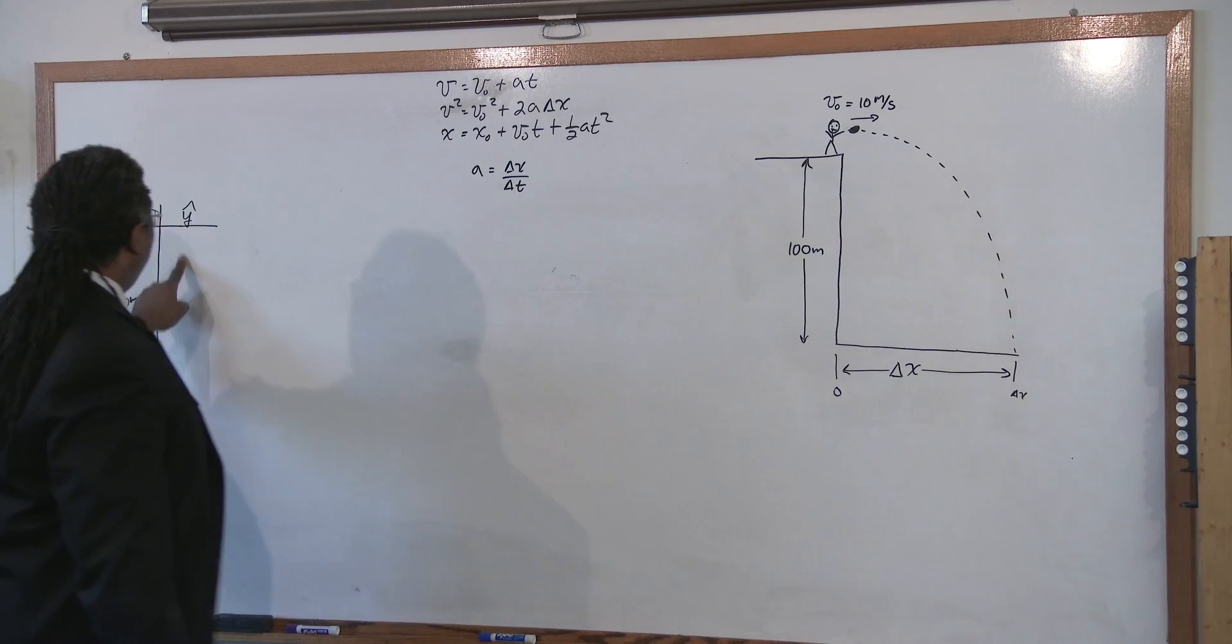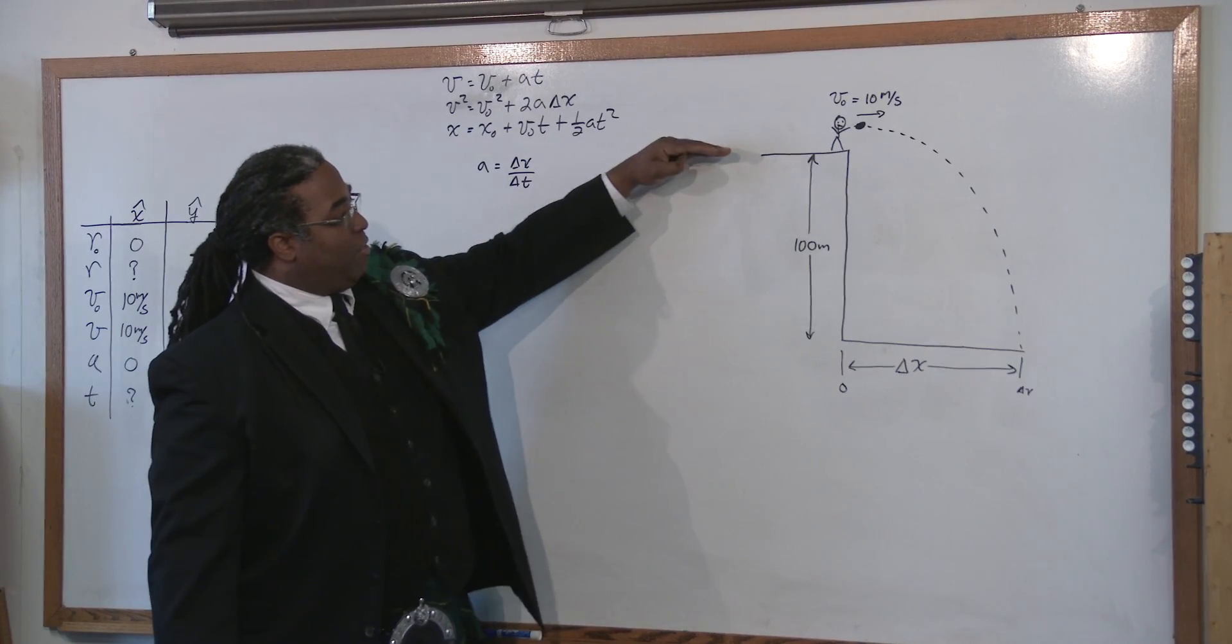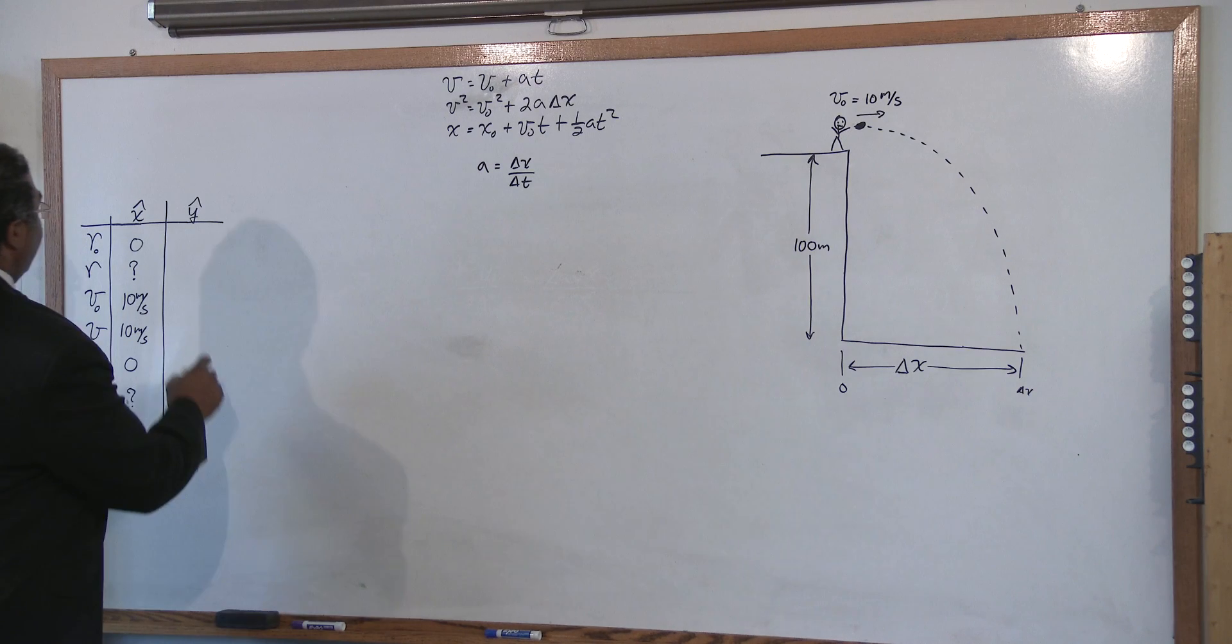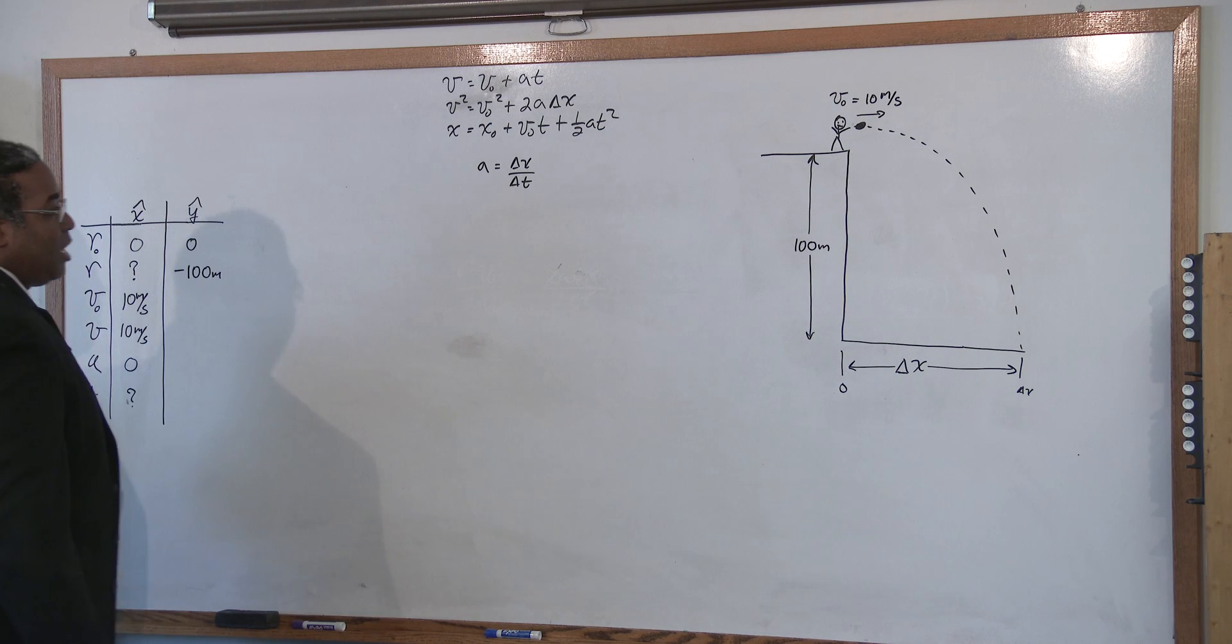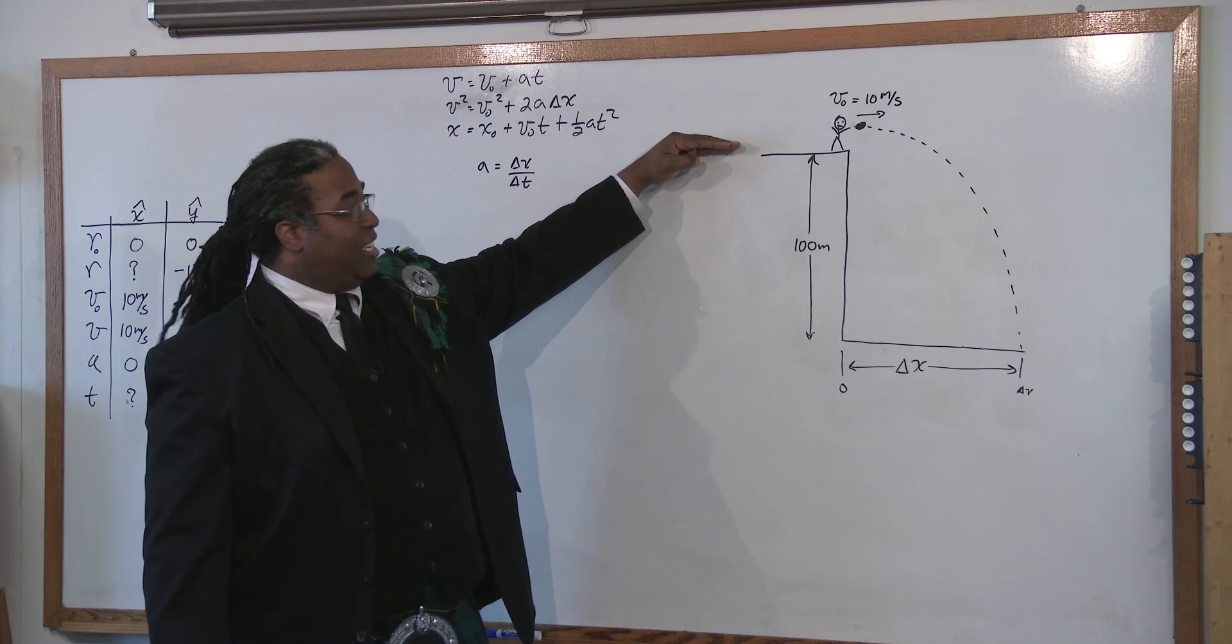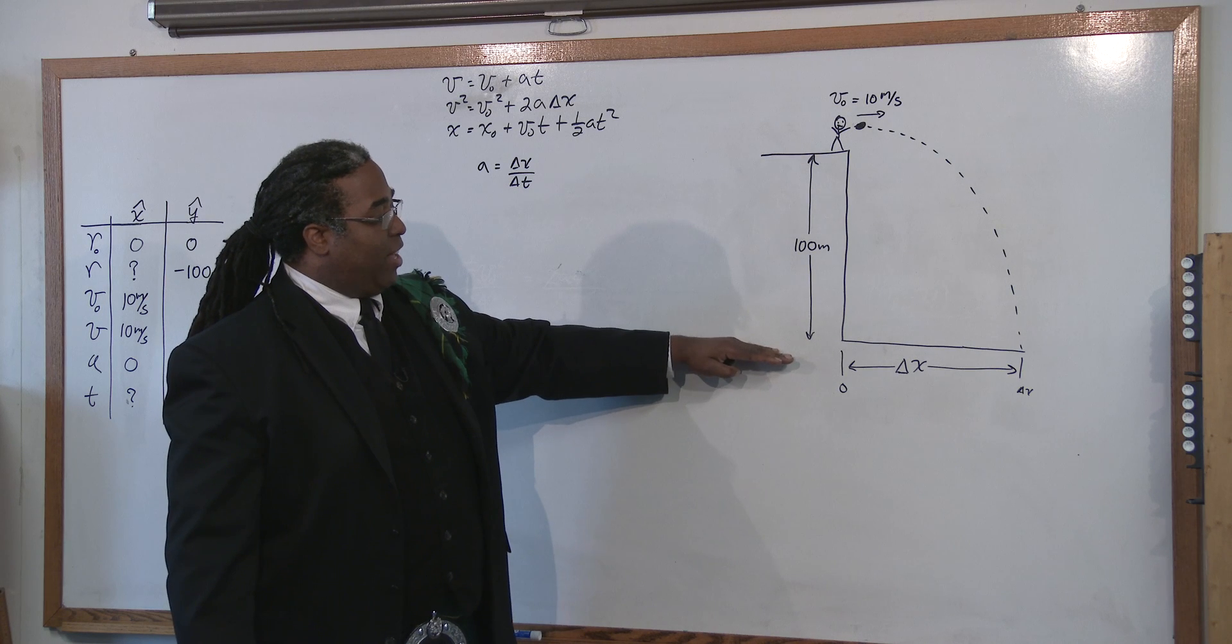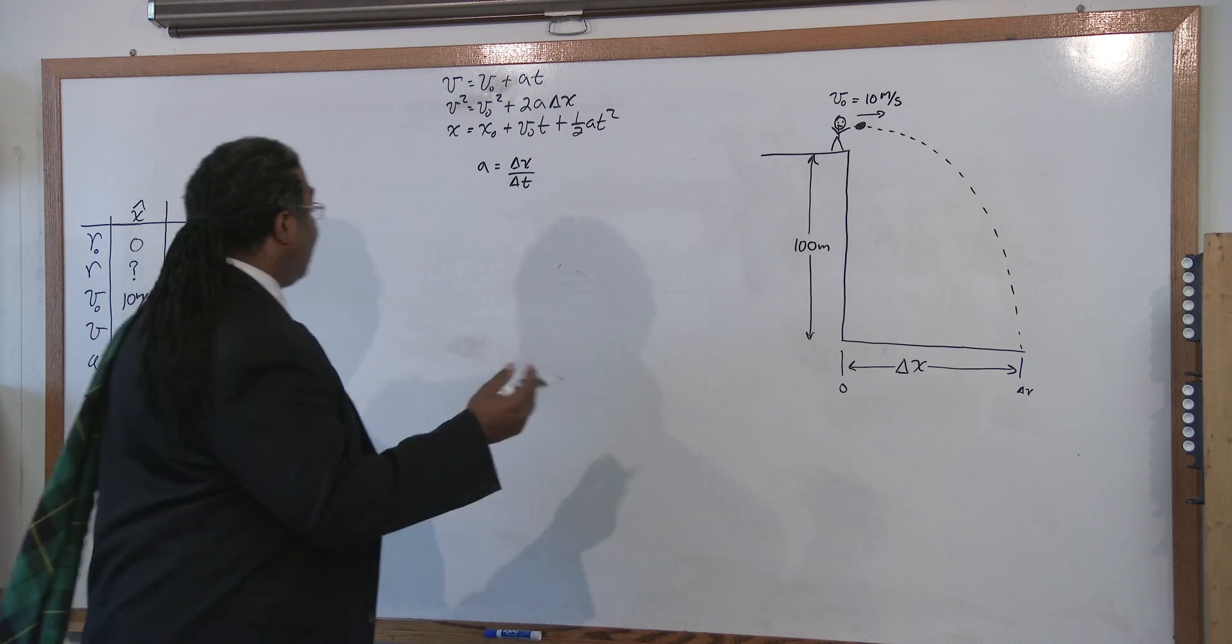Now, let's fill up the y component of our table. What do we know initially? We know initially it's at a position of zero and it falls to a position of negative 100 meters. Because remember in our problem, we define zero in the y as up here. Therefore, it fell 100 meters below the zero mark. Hence, it's negative.